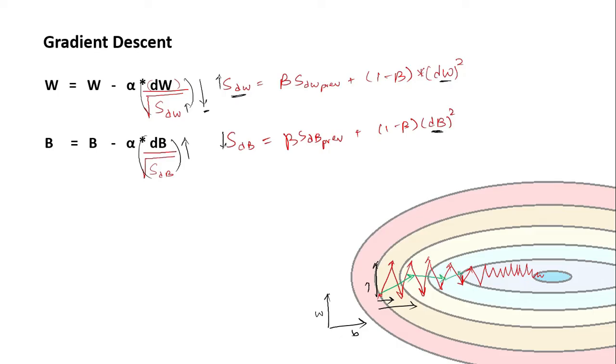And thus the net movement is going to be much more straighter and much larger towards the local minima. Thus we are going to have a faster training of our model. And as we are taking the square of dW and then taking its root, this algorithm is called root mean square propagation.